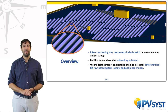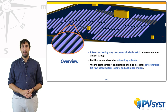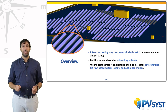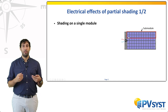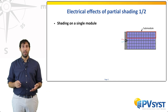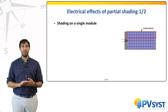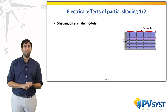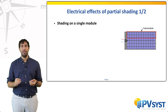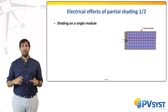Let us begin with the simplest case: the effect of shadings on a single module. The first observation is that whether one shades one cell or several cells within the same submodule, the resulting IV curve will look roughly the same. Here, a submodule is defined as a collection of cells in series protected by a bypass diode. This behavior is characteristic of components in series, as any current limitation will affect all components. Most of the modeling philosophy in PVSyst is therefore based on defining the fundamental unit of shading as a submodule, rather than the single cell.